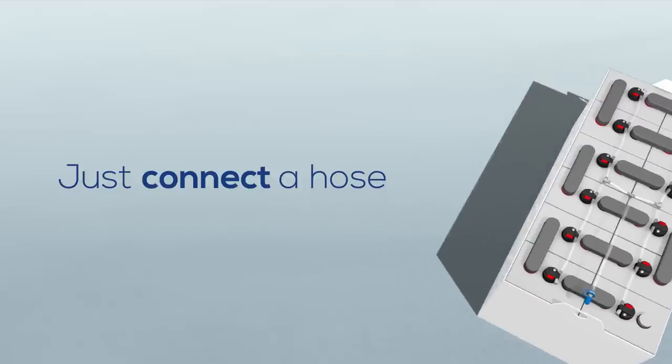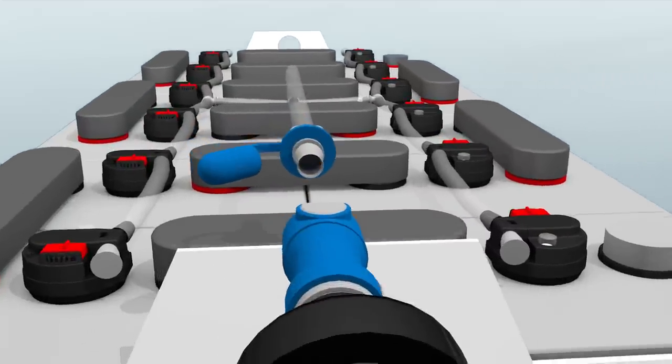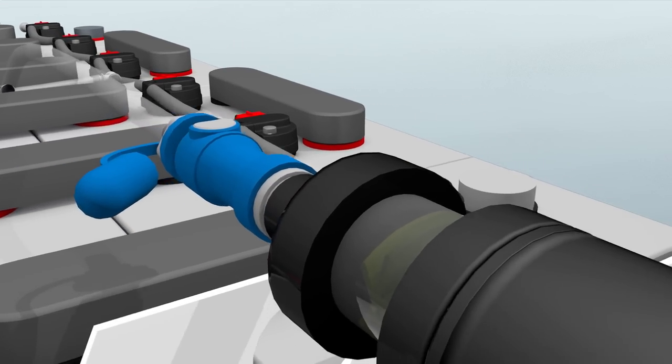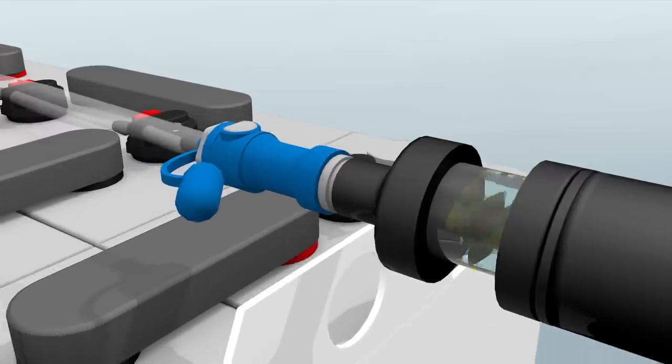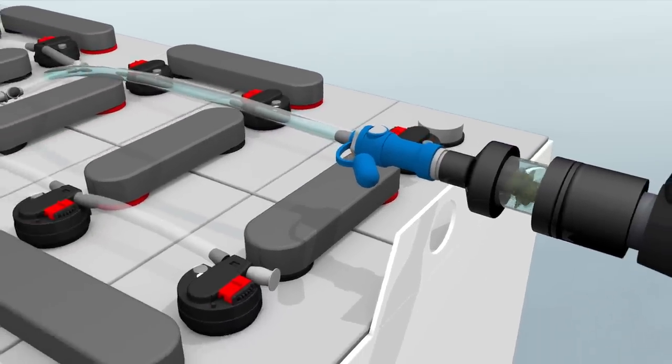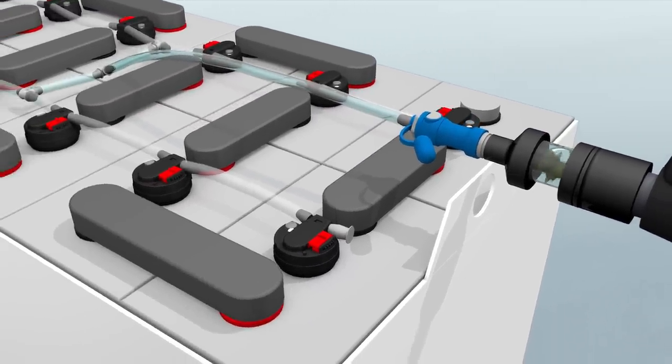Just connect a hose and you're good to go. Let's zoom in for a closer look. Once you connect the nozzle to a hose and turn the water on, you'll see the water indicator spin. That's how you know water is flowing through the tubing.